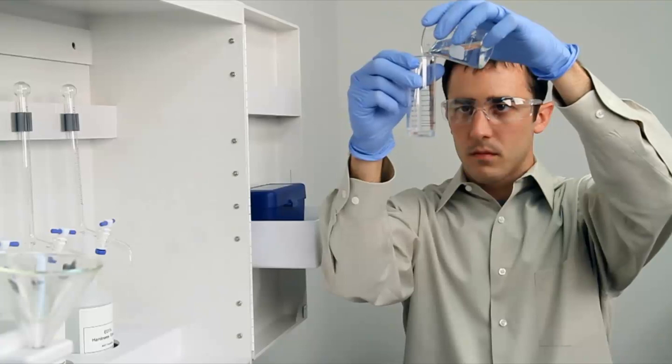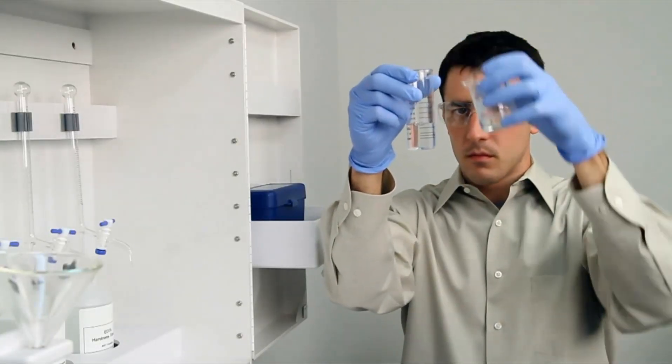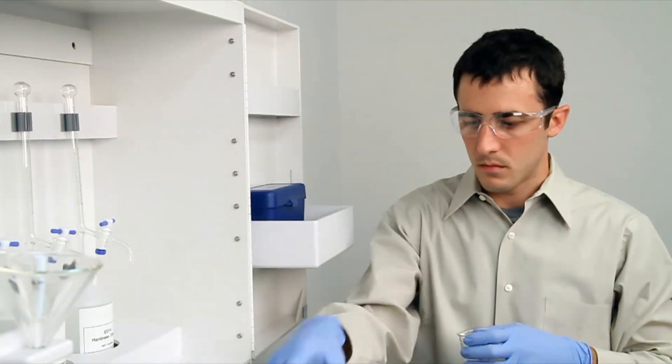To get an accurate sample size, you want to hold the vial close to eye level. Once you feel you have an accurate sample, place the vial on a level surface and bend down to eye level.